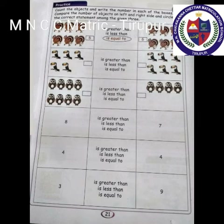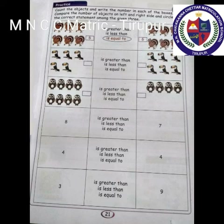Third picture: there are 8 birds on one side and 4 birds on the opposite side. Therefore, 8 is greater than 4. The remaining questions are homework.